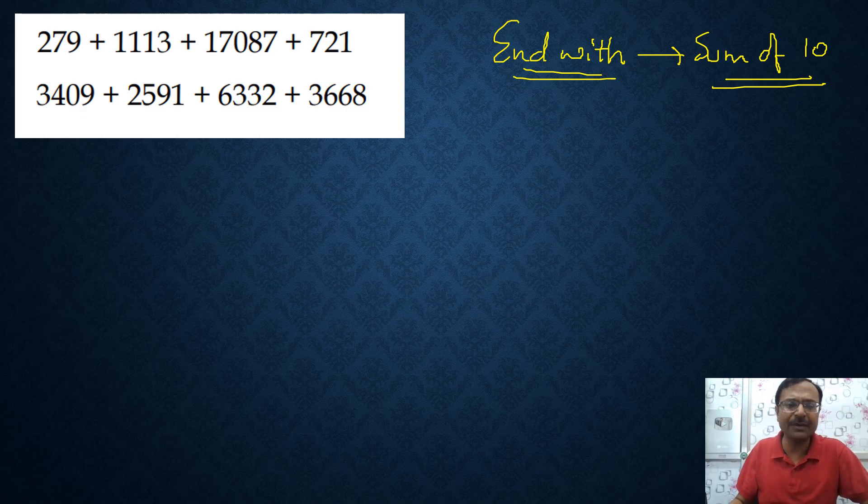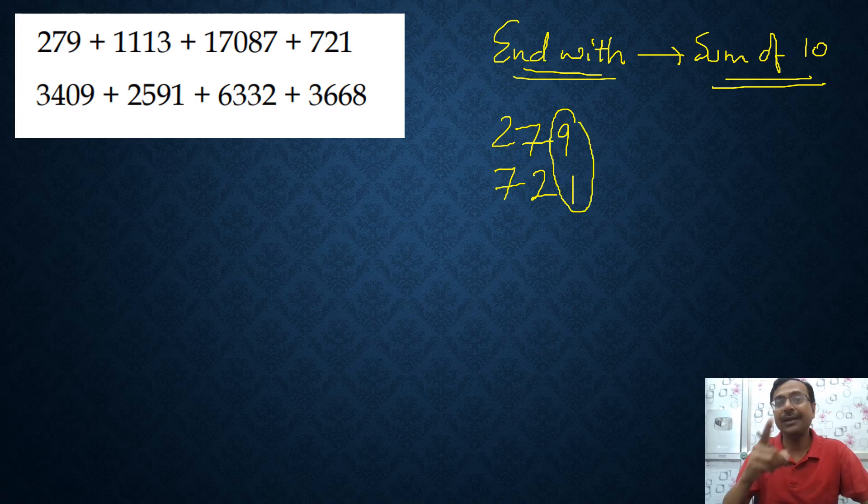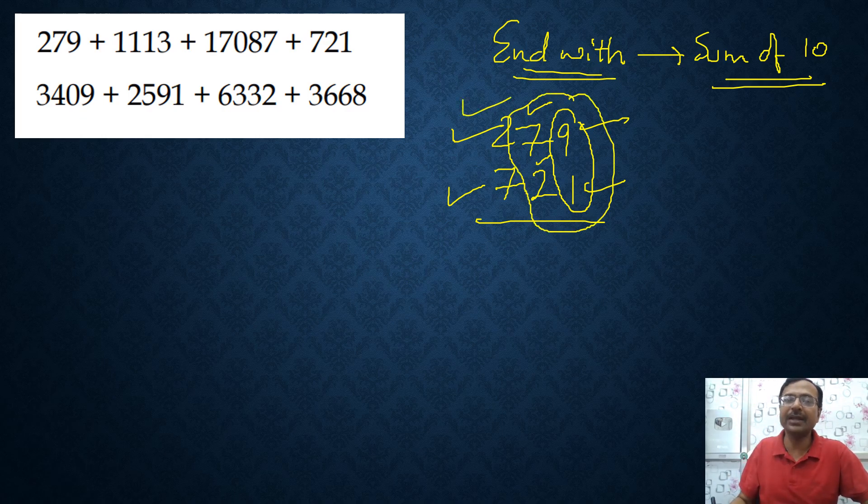If you see very carefully the number 279 in the first problem and 721, the first and the fourth. What is the sum of the unit digits? 9 and 1, it is 10. Therefore these two numbers can be added mentally. 7 tens and 2 tens there are 9 tens and 9 plus 1 is another 10. So 79 and 21 forms 100 and already we have 2 plus 7 is 900, so this is actually 1000.